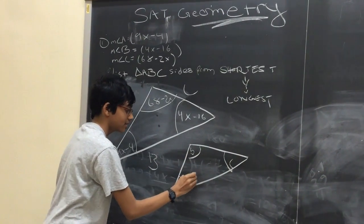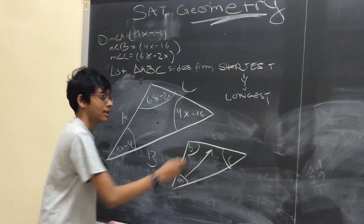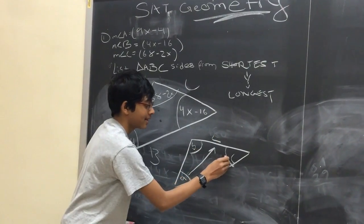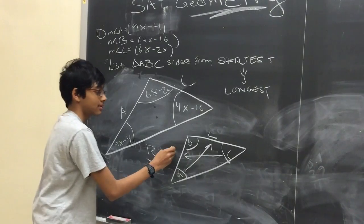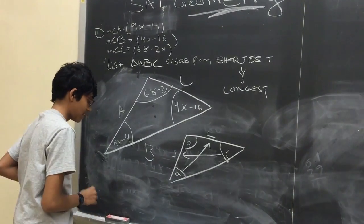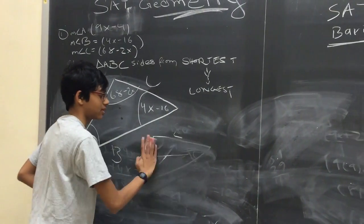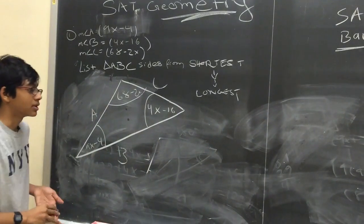The side adjacent to the largest internal angle is the largest side, and the side adjacent to the shortest side. So we're just going to keep that property in mind while we solve this problem.